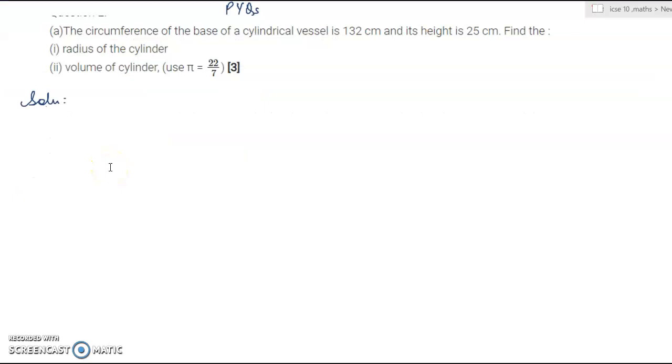Now we'll start with some previous year questions of board examination. This is from 2018. The cylindrical vessel circumference is 132 centimeter. That means 2πrh is given, equal to 132 centimeter. Please note down the units that are provided. If it is in meter or in centimeter, you will have to convert all these units in the same measurement. The height is mentioned 25 centimeter. We'll put this value here. Pi is already given 22 by 7, h is 25. So r is equal to 21 centimeter.